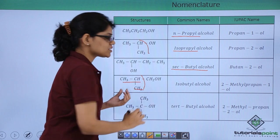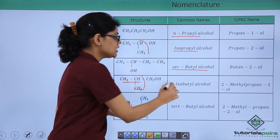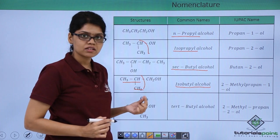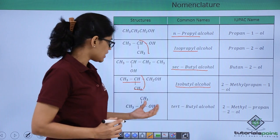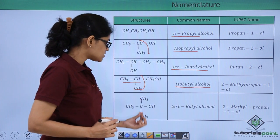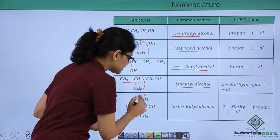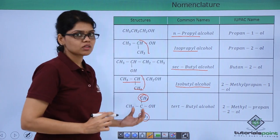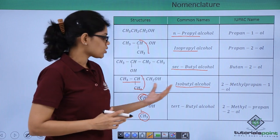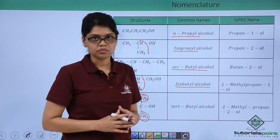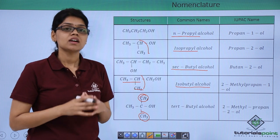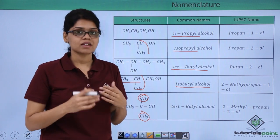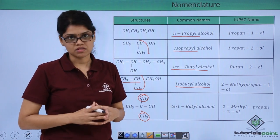CH3CHCH3CH2CH2OH is isobutyl alcohol because there are 4 carbon atoms. And when two methyl groups are attached to the same carbon, that particular structure corresponds to the common name tert-butyl alcohol. You must remember the common names of these structures because they come up repeatedly throughout organic chemistry.